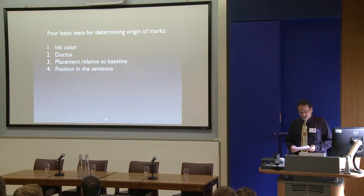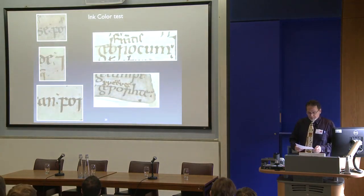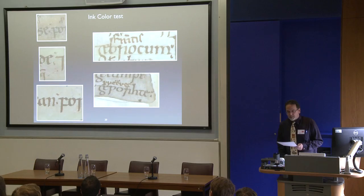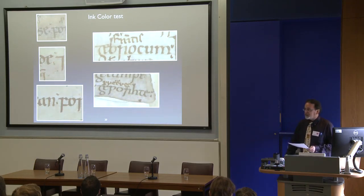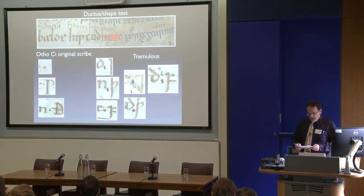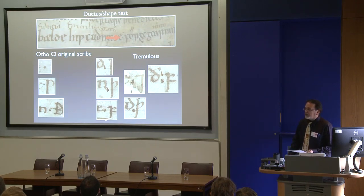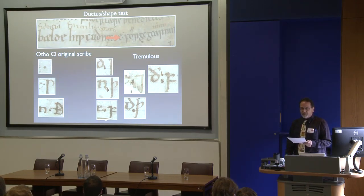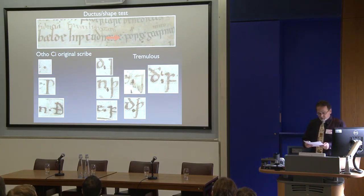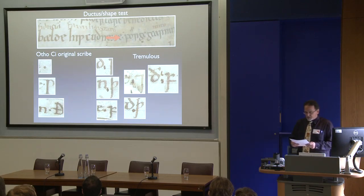For ink color: does the mark differ sufficiently in ink color from the surrounding text more than might be explained by the scribe recharging his pen at the end of a stint? Does it resemble the color of other markings made by Tremulous in the immediate vicinity? For ductus: while there is frequently not much to go by — the strokes are few and pretty minimal compared to the formation of letters, especially when it comes to the punctus — it's still sometimes possible to distinguish between a punctus made by the original scribe and one applied by Tremulous.